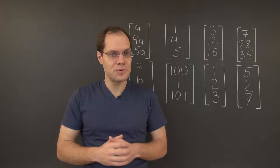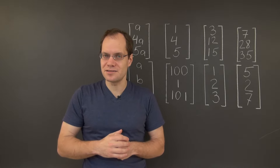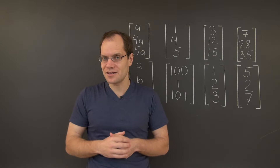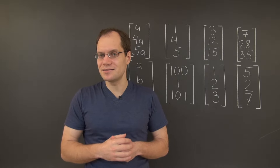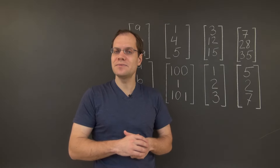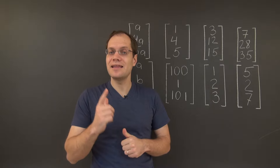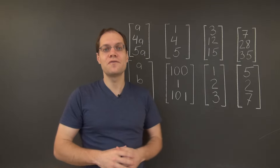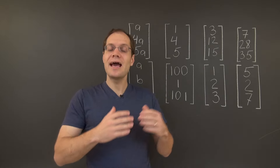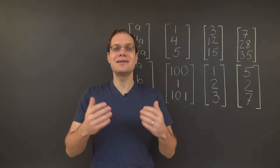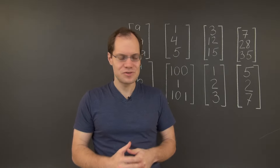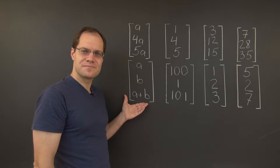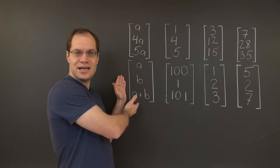That's the only way two vectors could be linearly dependent — if one is a multiple of the other. Since neither is a multiple of the other, these vectors are linearly independent. So we have two linearly independent vectors in the mix, which shows that the span is at least two-dimensional. If it is at most two-dimensional and at least two-dimensional, then it is precisely two-dimensional — a two-dimensional subspace of this space.